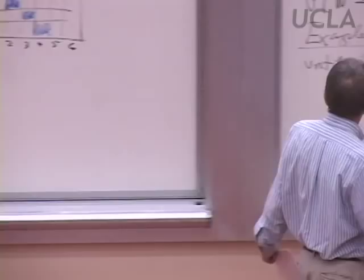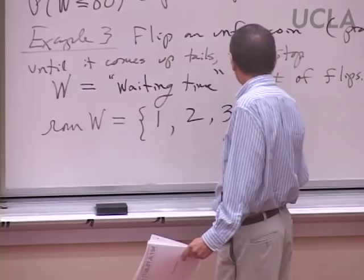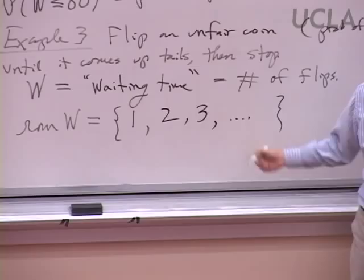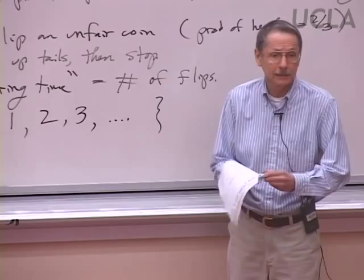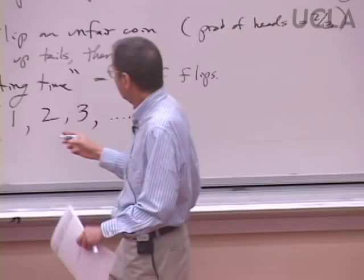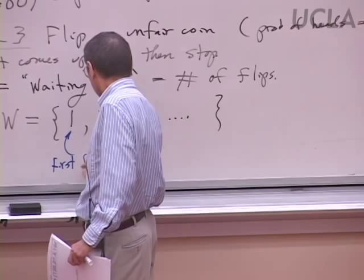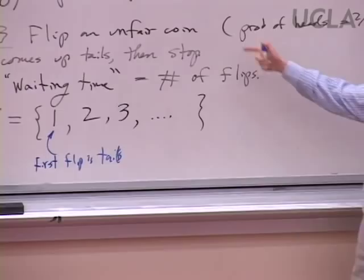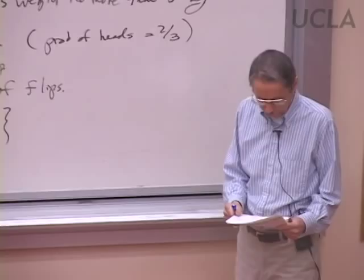Or it could be 17 — perhaps the first 16 flips all come up heads and it takes 17 flips to get a tail. It would be one if the first flip comes up tails. But it's not a fair coin, so it may take a long time.